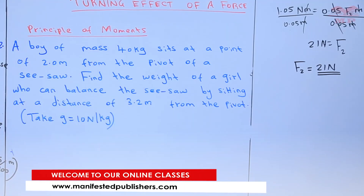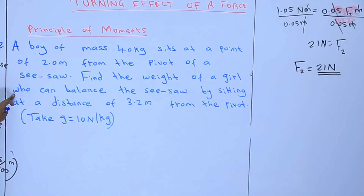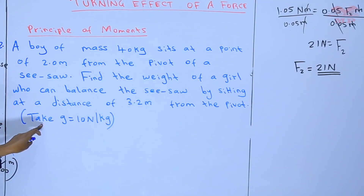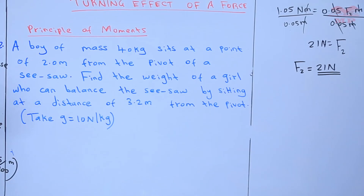Question number two: A boy of mass 40 kilograms sits at a point 2.0 meters from the pivot of a seesaw. Find the weight of a girl who can balance the seesaw by sitting at a distance of 3.2 meters from the pivot. We have been told to take gravitational force as 10 newtons per kilogram. When we are given such a question, we need to have a diagram so that we can see what is happening and calculate what is in question.